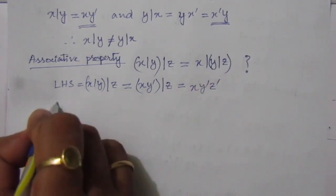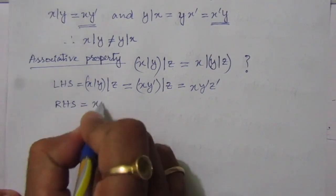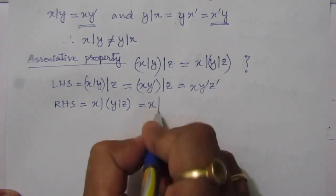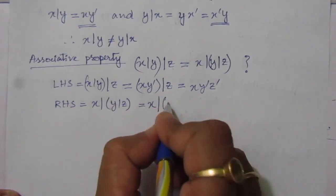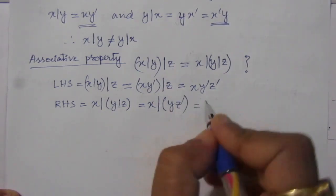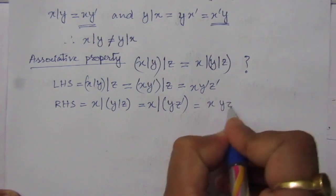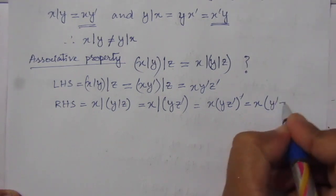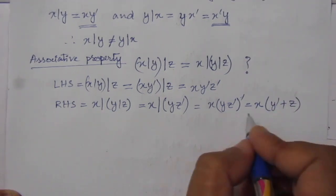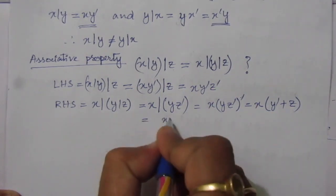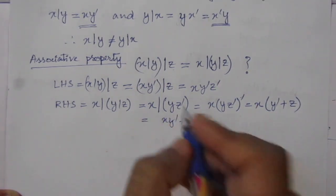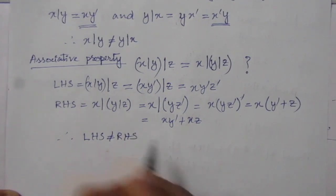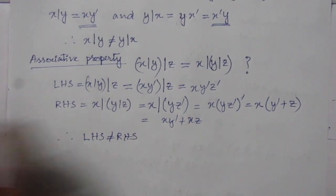Now let us find the right-hand side: x inhibition (y inhibition z). Here, y inhibition z equals y·z̅, so x inhibition (y·z̅) gives x·(y·z̅)̅, which expands to x·(y̅ + z). We can write this as x·y̅ + x·z. Since the left-hand side (x·y̅·z̅) is not equal to the right-hand side (x·y̅ + x·z), this inhibition operation is neither commutative nor associative.